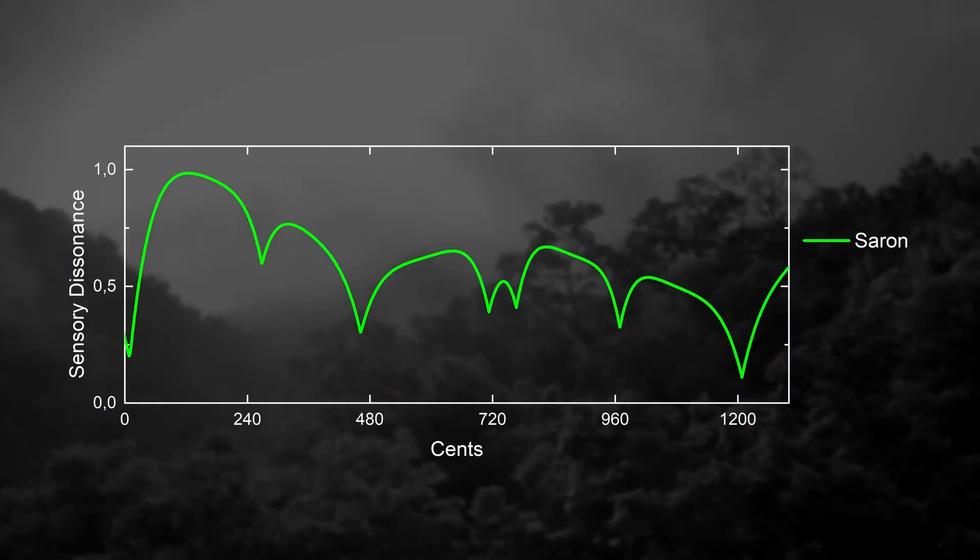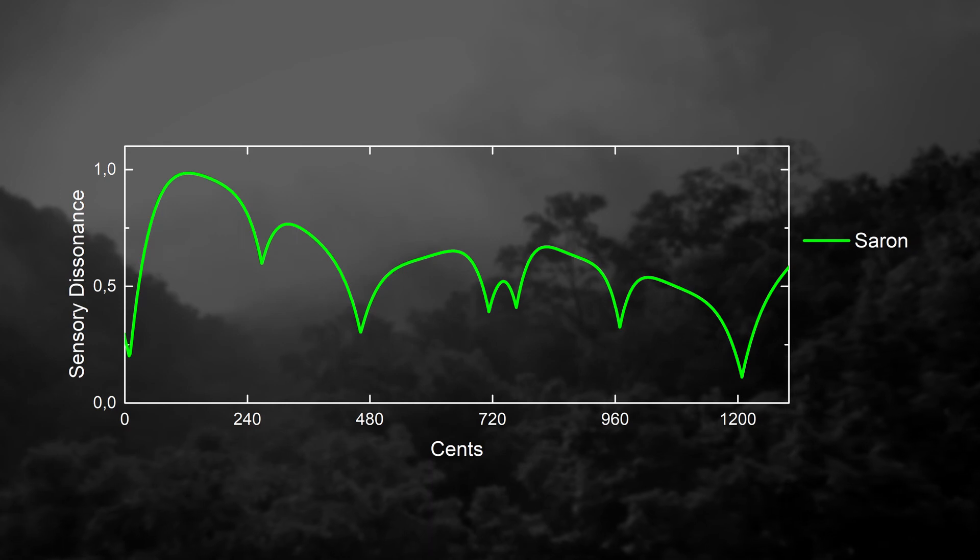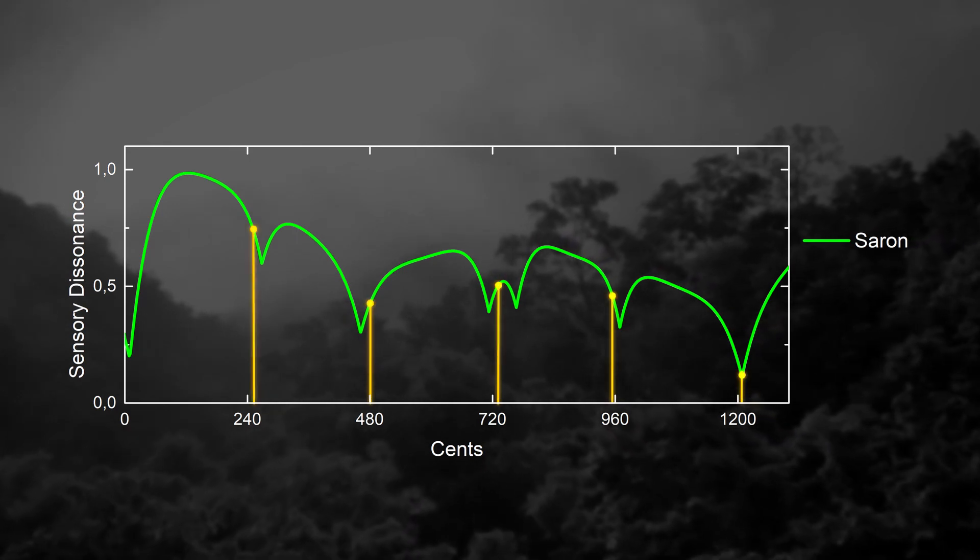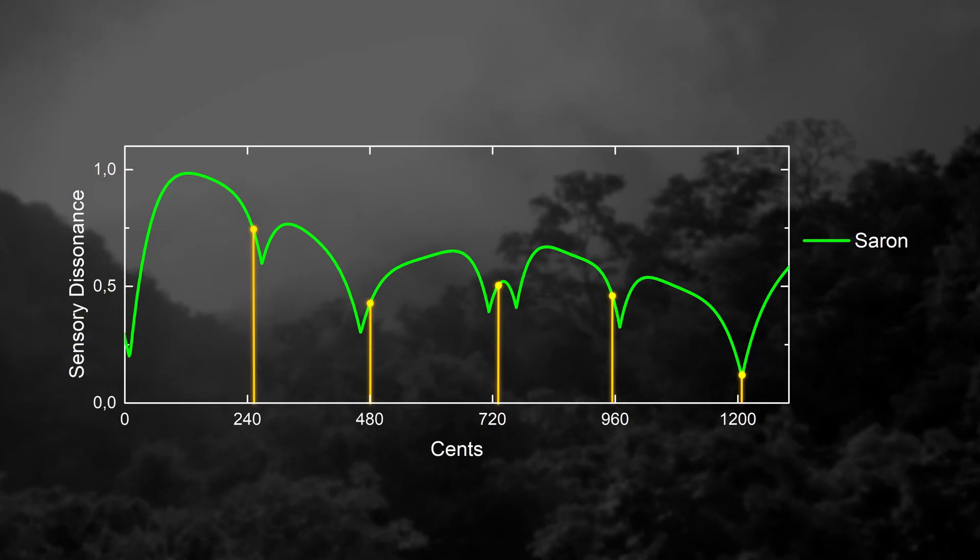So, this is what we get for Saron tuned to slendro. We can clearly see that dissonance curve correlates very well with actual slendro tuning this particular gamelan is tuned to.